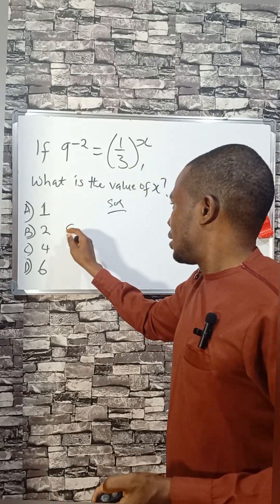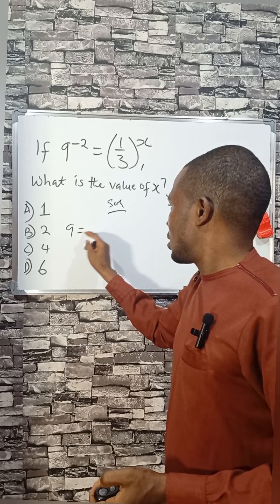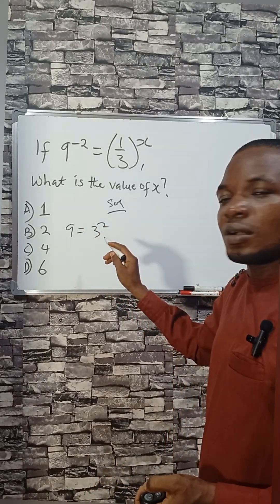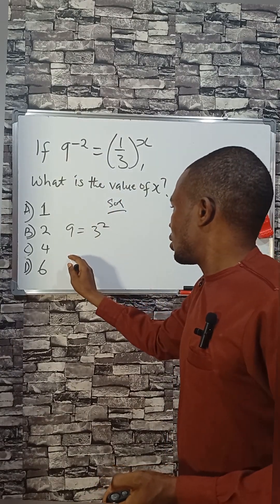Let's crack this. 9 can be written as 3 squared, so we can transform this to be 3 squared.